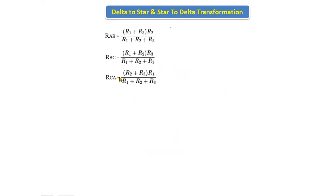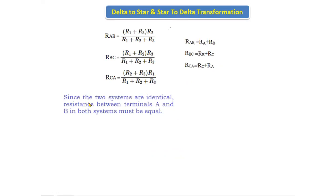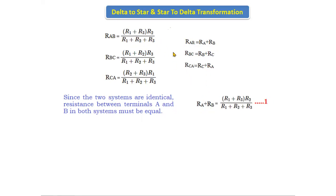These are the equations from the delta connection, and these are the equations from the star connection. Since the two terminals are identical, the resistance between terminals A and B in both systems must be equal. Equating the star and delta RAB expressions, we get: Ra + Rb = (R1 + R3)·R2 / (R1 + R2 + R3). This is equation number 1.